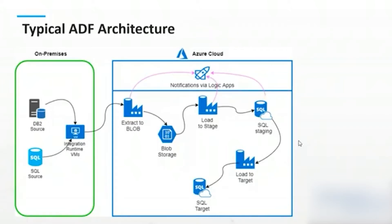An Integration Runtime is a small piece of software Microsoft provides that allows the ADF system to communicate with on-premises sources. You can install it manually or use their express client. The basic concept is that it encapsulates all data transfer to the cloud to the specific pipeline you've set up — it's not just going out into the cloud randomly. There's key authentication between the two, and it encrypts everything being pushed up to the cloud.